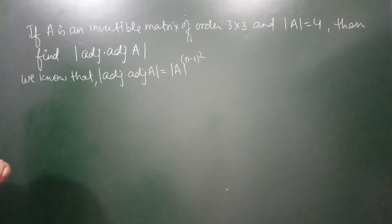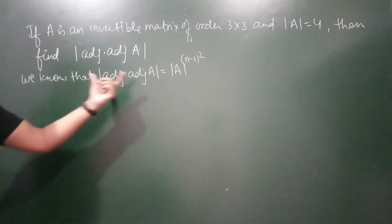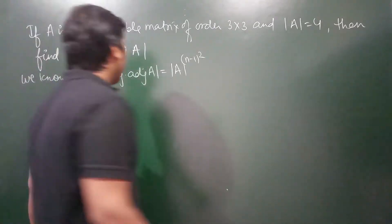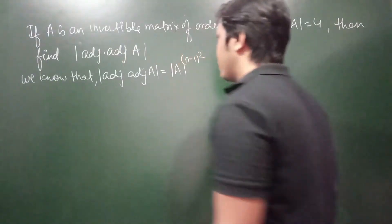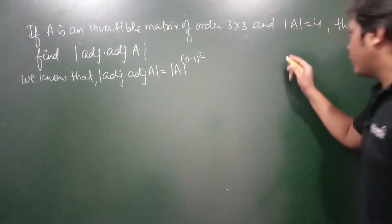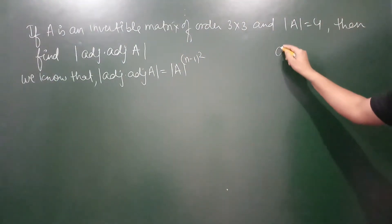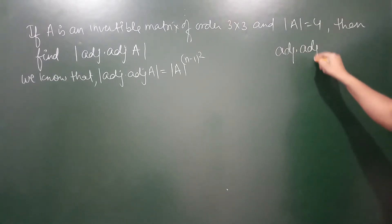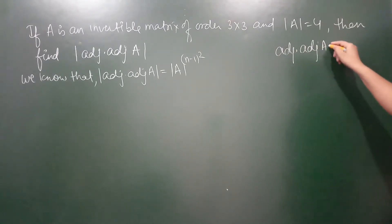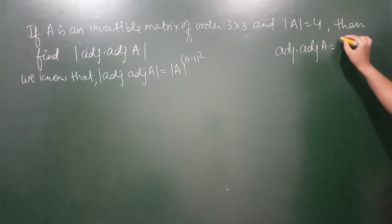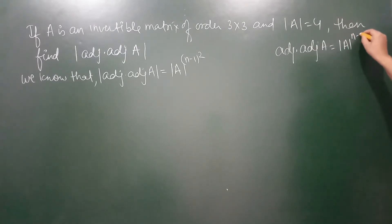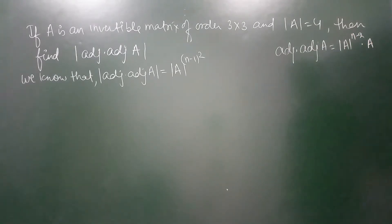यह property बहुत काम आती है। चलिए पहले हम लिखते हैं कि इस property को हम derive कैसे कर सकते हैं। Previously हमने establish किया था कि adjoint of adjoint of A equals determinant of A raised to the power (n−2) into matrix A.